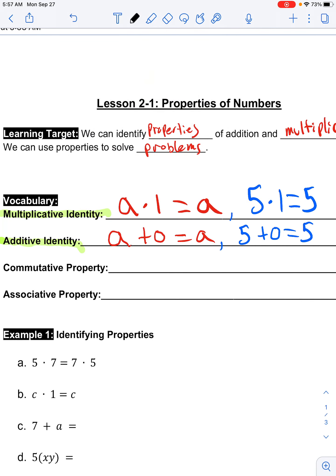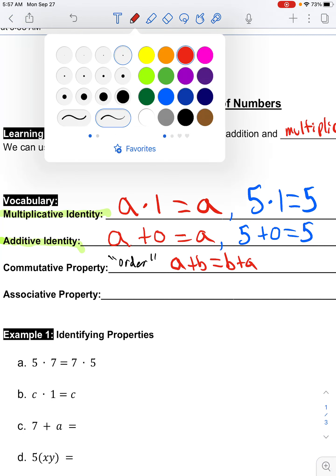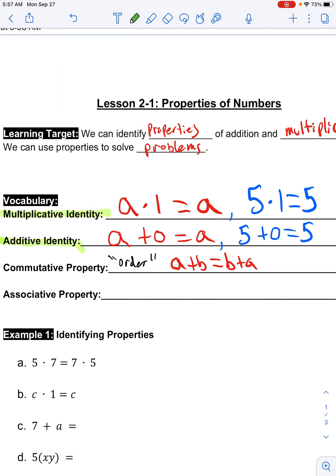Commutative property is all about the order that we do things. So I'm just going to put the order here. For example, I'm going to use a variable example and also a numerical example. If I said that a plus b would be the exact same thing as doing b plus a. Now this commutative property works for addition and multiplication.